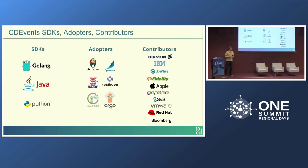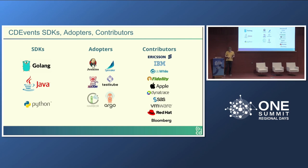Apart from the specification, CD Events also provides SDKs — today we have Go, Java, and Python. We have a few adopter projects: a plugin available for Jenkins, an implementation in progress for Spinnaker, Tekton with an experimental implementation, TestKube — a testing framework that has adopted CD Events — and we are working with the Harbor and Argo communities, who have an RFC for integrating CD Events. We have contributions and support from many companies, and our community keeps growing.